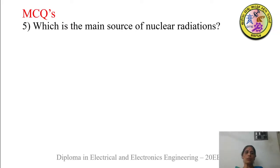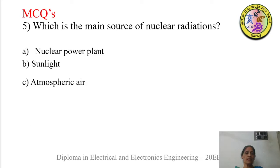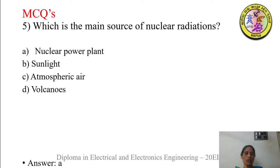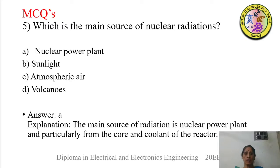Next MCQ: what is the main source of nuclear radiation — nuclear power plant, sunlight, atmospheric air, or volcanoes? The correct option is A — the main source of nuclear radiation is the nuclear power plant. The radiation comes particularly from the core and the coolant of the reactor. From the nuclear reactor's construction and working, we know what the core and coolant are.